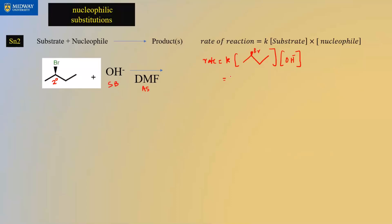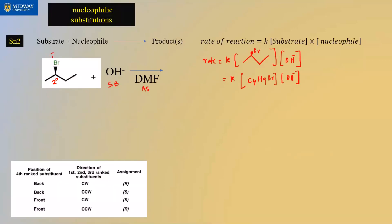You can also write the rate expression using the full molecular formula — counting the carbons and hydrogens — along with Br and OH⁻. Both representations are correct. Now we use our R/S chart: assigning priorities 1 through 4. Tracing the sequence 1→2→3, it is clockwise and the lowest priority group is in the back, so this is R. Therefore, the product must be S.